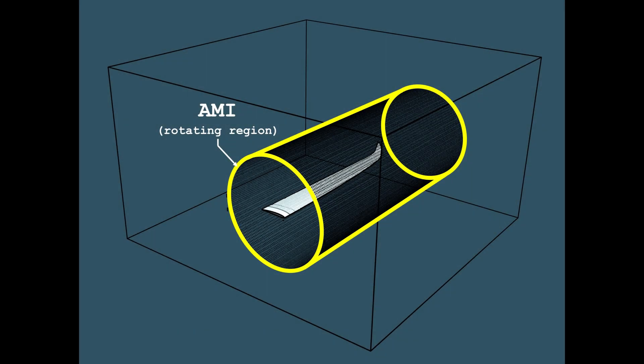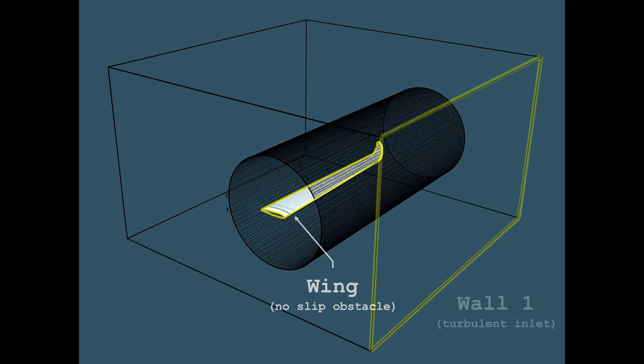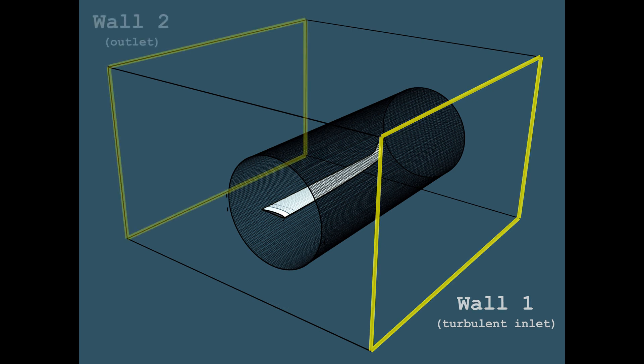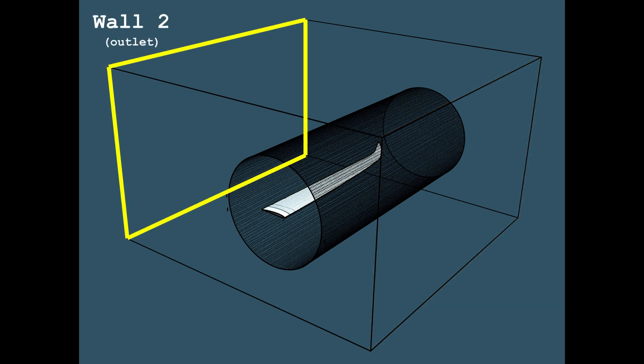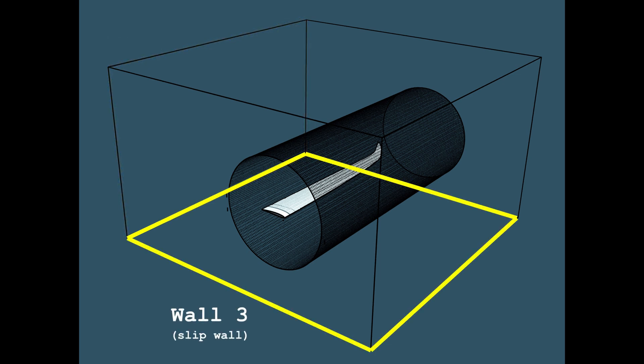Now I will show you the boundaries I have specified for the simulation. The first one is the rotating region, or AMI. Then the wing as a no-slip wall. A turbulent inlet. An outlet. Then slip walls around the wing.